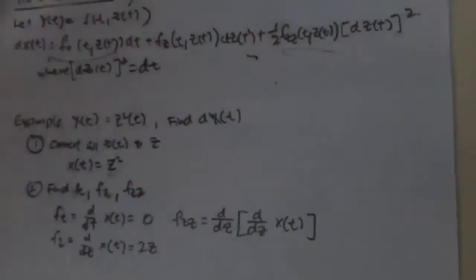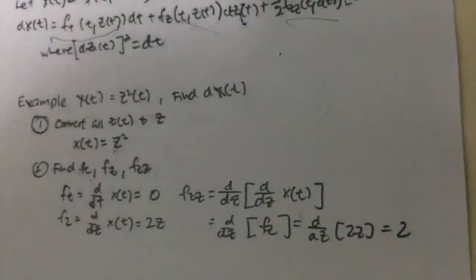And your F_zz is the differentiate with respect to Z twice of your X(t), which is equivalent to the differentiated form of your F_z, which is equals to the differentiated form of 2Z, which equals 2.